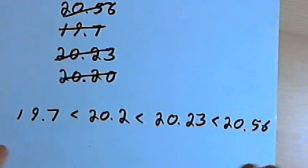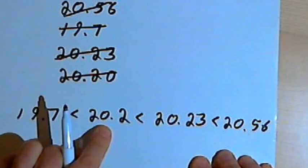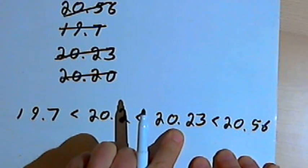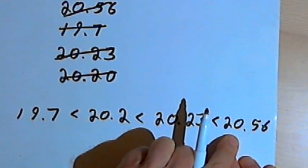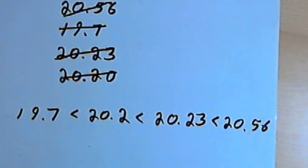Now I've got my numbers arranged in order from smallest to largest. 19.7 is less than 20.2, and that's less than 20.23, and that's less than 20.56. Okay, that's basically the whole process. Take care, I'll see you next time.